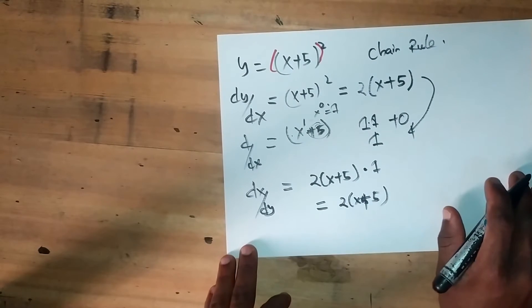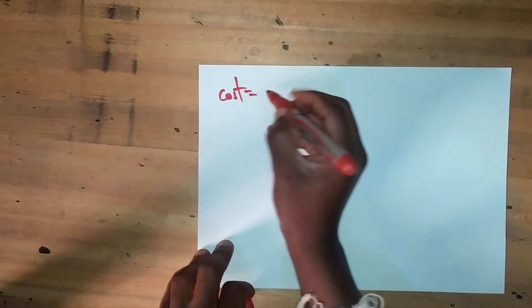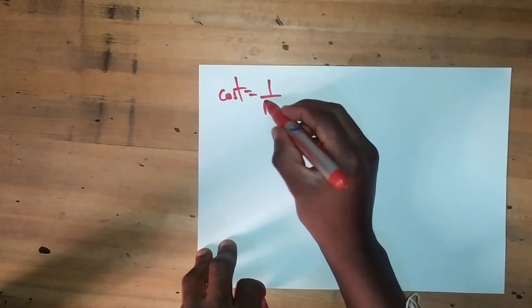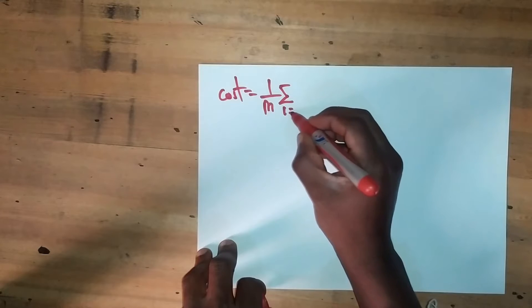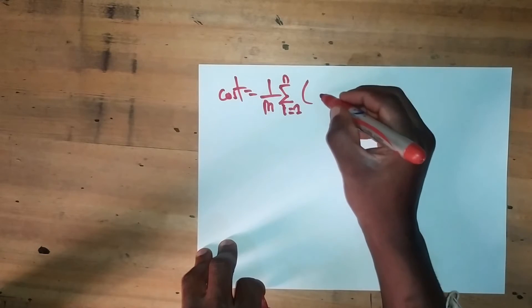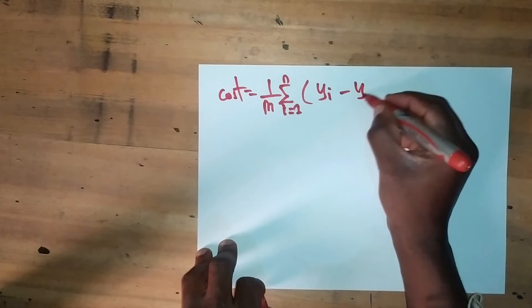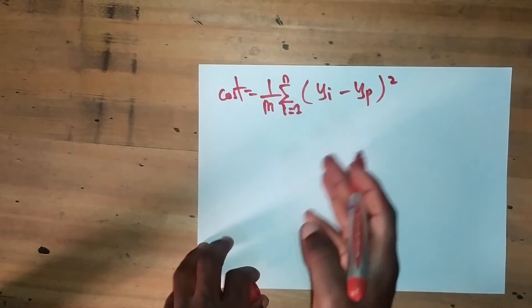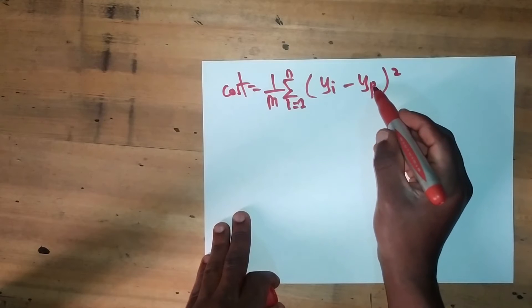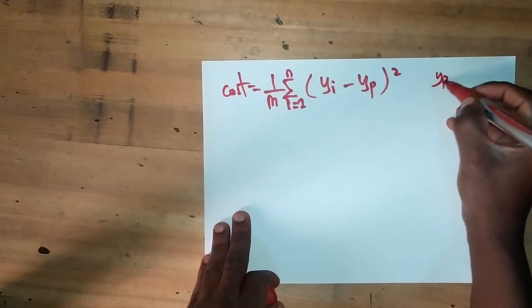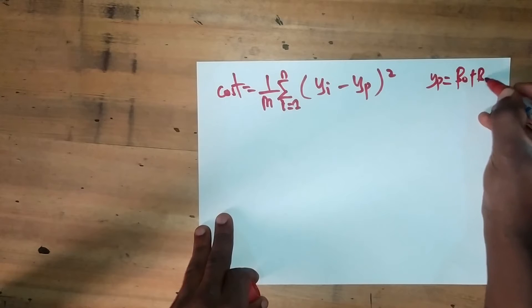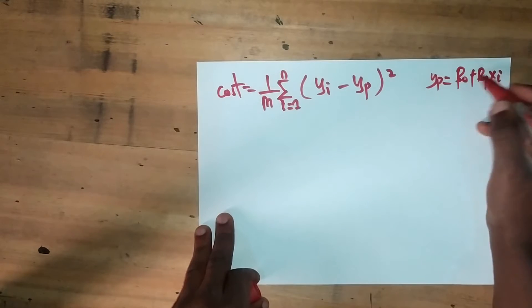Now, what about the cost function for linear regression? We know that the cost function for linear regression is 1 divided by the total number of elements, summation from 1 up to n, of (y actual minus y predicted) squared. This y predicted is β₀ plus β₁xᵢ, a linear model.